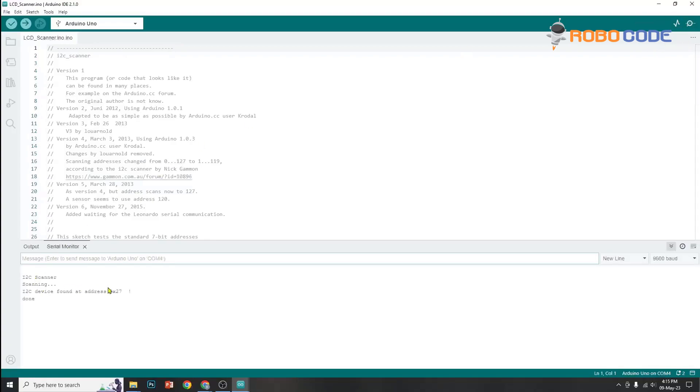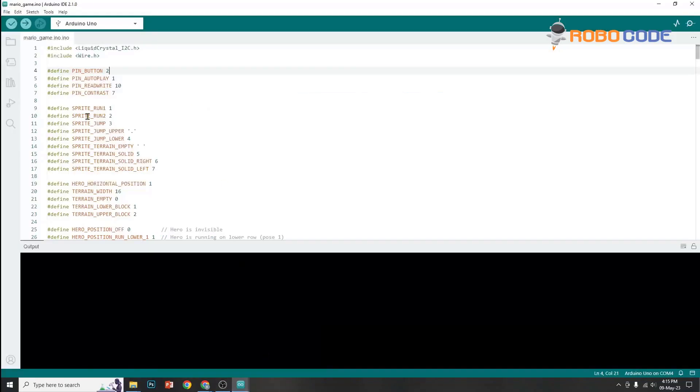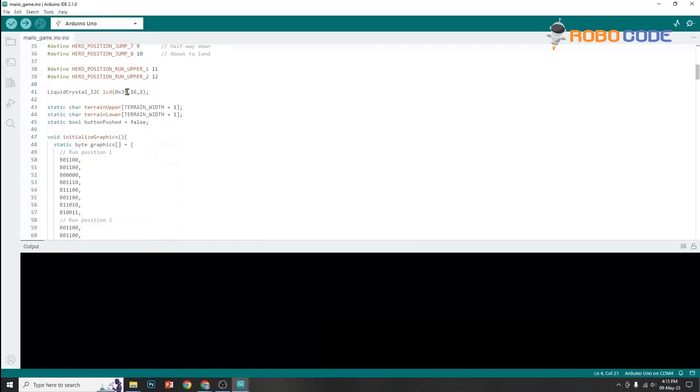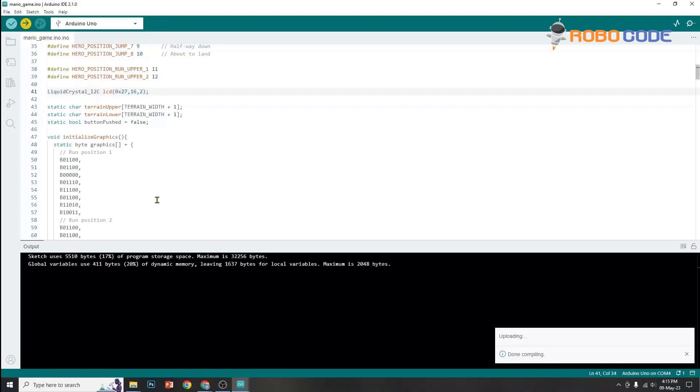We'll switch back to the mario code. We'll go to line number 41 and we will replace that value with whatever value we got in the LCD scanner. In our case, it's 0x27. And once that is done, we'll click the upload code button.